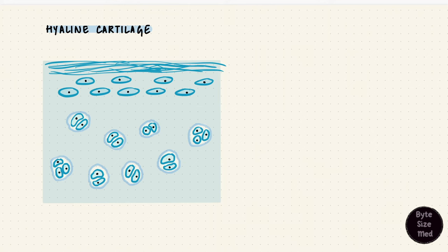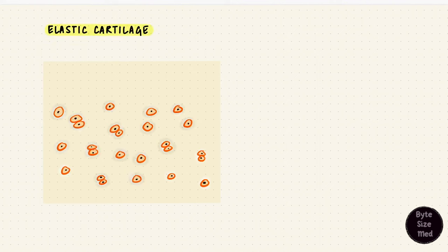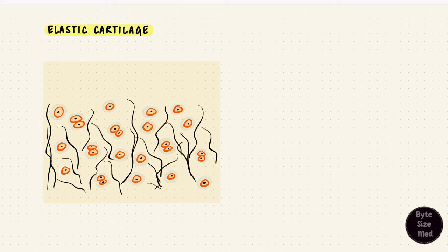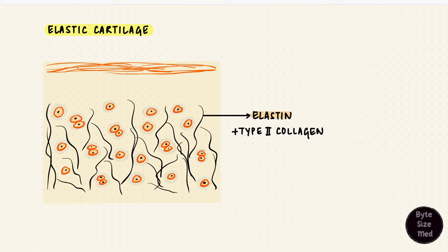Now we're done with hyaline cartilage. Elastic cartilage is the second type and it appears similar to hyaline cartilage except that it's got elastic fibers in that matrix along with type 2 collagen. It has a perichondrium as well, but the elastic fibers make this type of cartilage more flexible and helps it return to its original shape when bent.